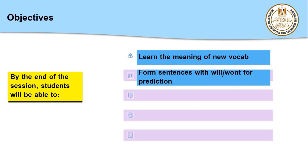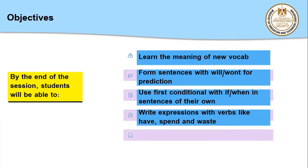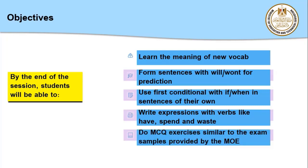You will learn to form sentences with 'will' and 'want' for prediction — ta'alm izzayin ta'am minabbar an al-mustabal by will or want. Use the first conditional with 'if' or 'when' in sentences of your own. Write expressions with verbs like have, spend, and waste. And do MCQ exercises similar to the exam sample provided by the Ministry of Education — exercises matching exactly what will appear in your end-of-month exams, insha'Allah.